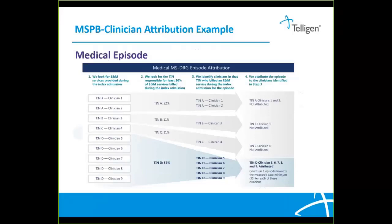Here is an example of patient attribution for a medical episode. The first step is to look at the E&M services provided during the index admission. There are four TINs. TINs A, B, and C only have 22%, 11%, and 11% respectively of the E&M services billed during the index admission, so they aren't considered for attribution. TIN D has 56% of the E&M services — more than 30% — so the clinicians within that TIN who billed E&M services will be identified. In this example, there are five clinicians (5, 6, 7, 8, and 9) who will each have one episode count towards the measure's case minimum of 35.